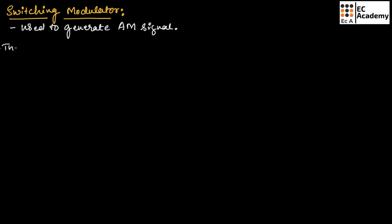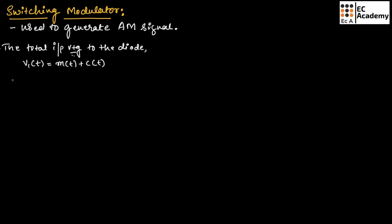The total input voltage to the diode can be given as V1(t), which is equal to m(t) plus C(t). We can write this expression as V1(t) = m(t) + Ac·cos(2πFct). Let us call this equation number 1.